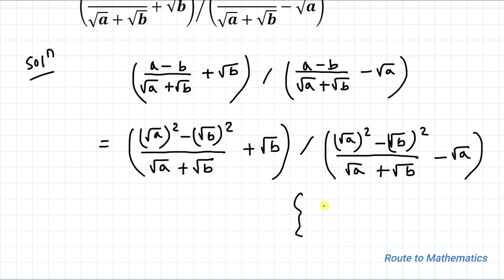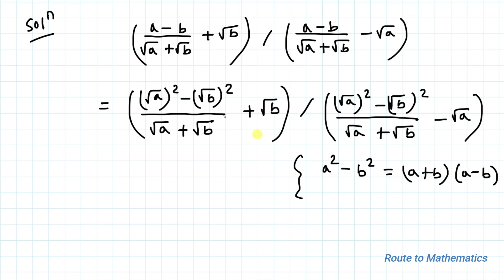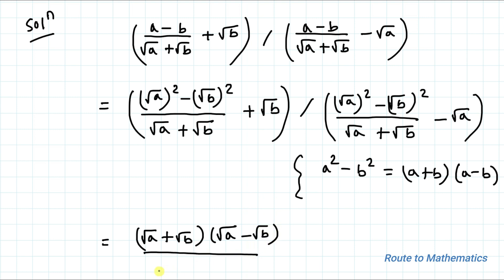We know the algebraic identity: a squared minus b squared equals (a plus b) multiplied with (a minus b). Let's apply this identity here. So the numerator (root a) squared minus (root b) squared becomes (root a plus root b) multiplied with (root a minus root b), divided by (root a plus root b), plus root b, whole divided by the second part similarly.